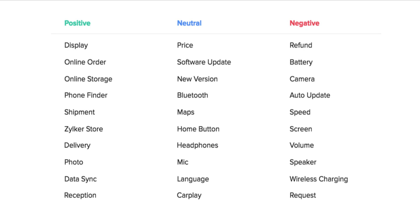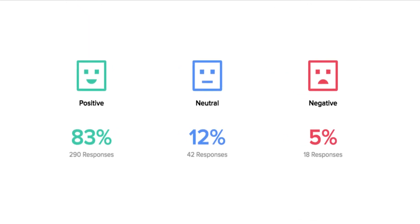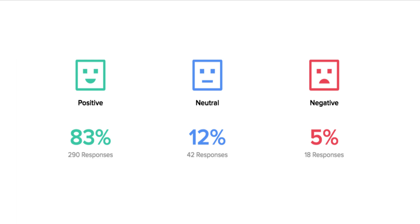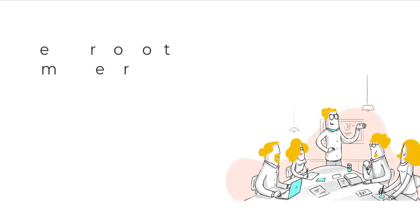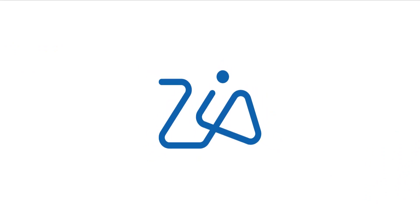What's better — Zia automatically identifies and aggregates the topics that customers talk about the most, and attaches a sentiment to each topic: positive, negative, or neutral. Decision makers in your company can see the terms that led to the respective sentiment to understand the root cause of customer dissatisfaction.